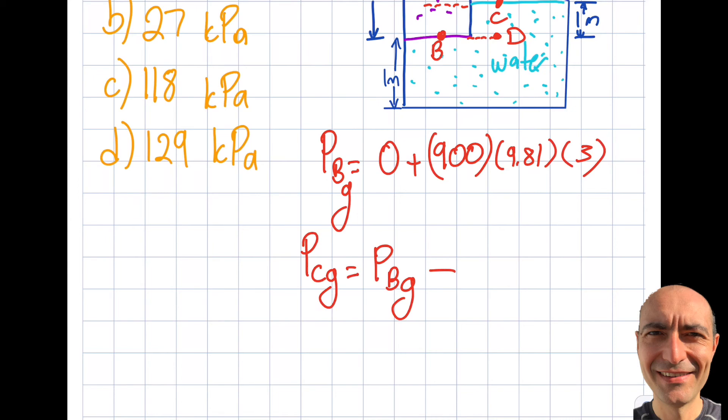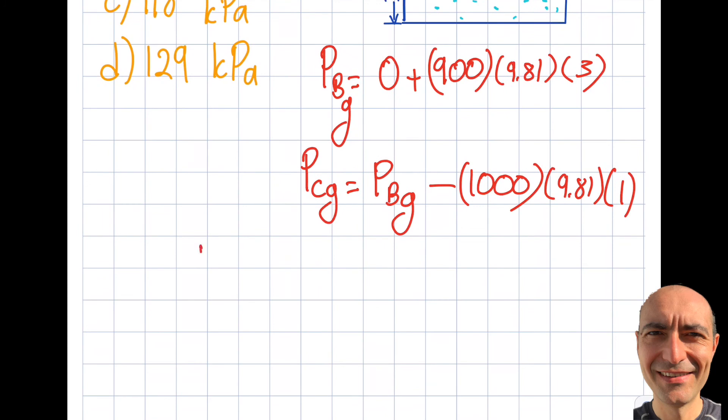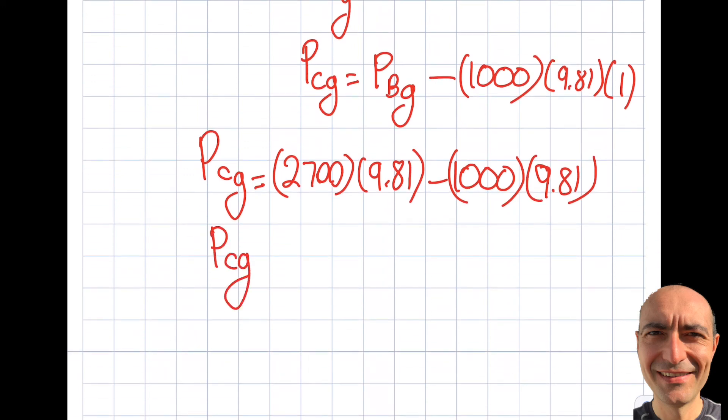Minus - why minus? Because I'm going up, and this height is given as 1 meter. So I'm going up through water: 1000 (density) × 9.81 × 1 meter. Combining this, I get PC_gauge as 2700 × 9.81 (where 2700 is 900 × 3) minus 1000 × 9.81. This gives me 1700 × 9.81, which equals 16,677 Pascals.